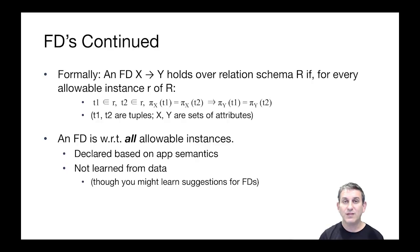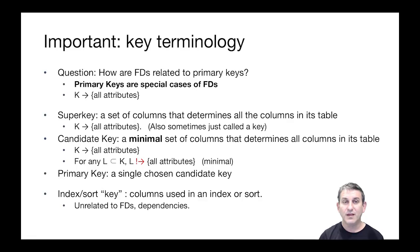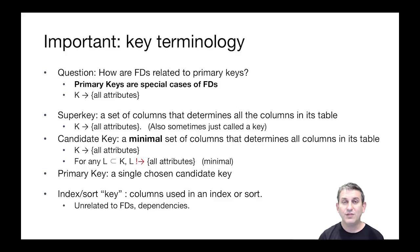You can't look at a table and decide what its FDs are, but you can certainly look at a table and decide which FDs it might violate. Some key terminology: how are functional dependencies related to primary keys? Primary keys are special cases of functional dependencies of the form K arrow all the attributes of a table. So a primary key is a functional dependency where the right-hand side is all the attributes of the table and the left-hand side is a primary key.